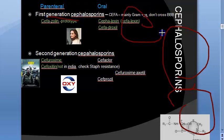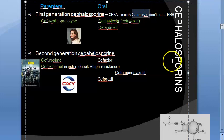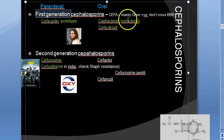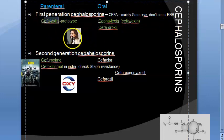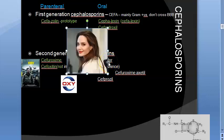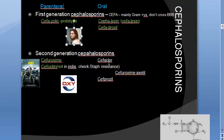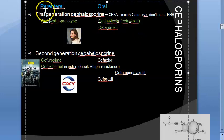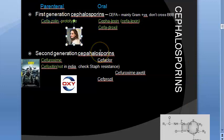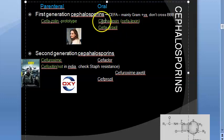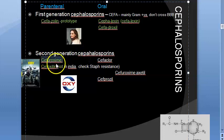First generation cephalosporins are more active against gram-positive bacteria. Remember: first generation — gram positive. They won't cross the blood-brain barrier. The prototype drug is cefazolin — remember 'Angelina Jolie' for 'zolin.' Cefazolin is parenteral; the oral form is cephalexin.